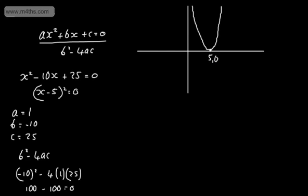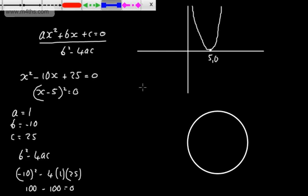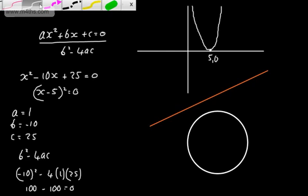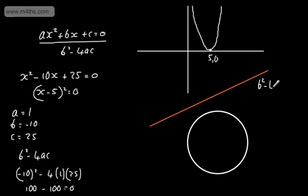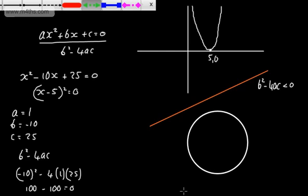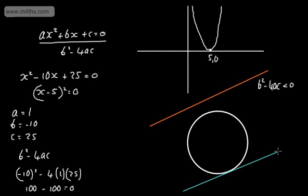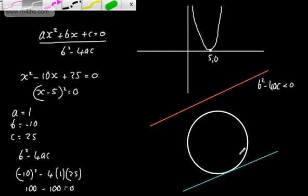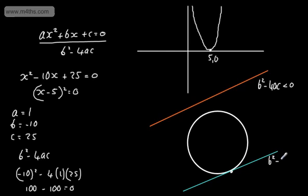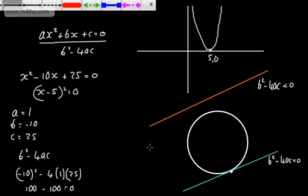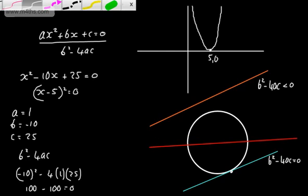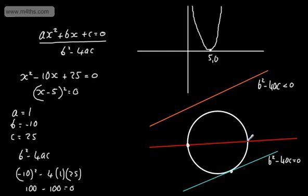If we now consider the equation of a circle and a straight line, we have three scenarios. If the line doesn't intersect the circle, b squared minus 4ac is less than 0 — no real roots. If the line is a tangent, touching at one point, b squared minus 4ac equals 0. If the line crosses the circle at two points, b squared minus 4ac is greater than 0.